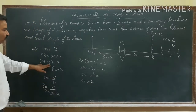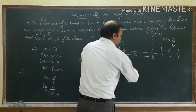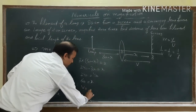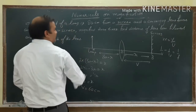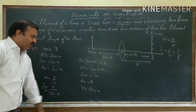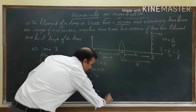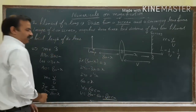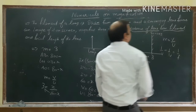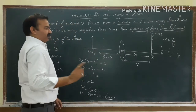We got x equal to 60. Now x was basically OB, which is V. So V is equal to 60 centimeters. In place of V we had written x, so V equals 60. Therefore U is 80 minus 60 is equal to 20 centimeters. The first part asks for the distance of the lens from the filament, and that is U equal to 20 centimeters.